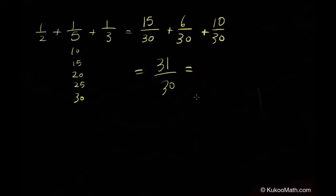This is an improper fraction, so let's turn it into a mixed fraction. It'll be one and one-thirtieth.